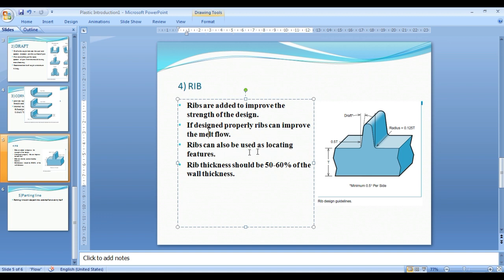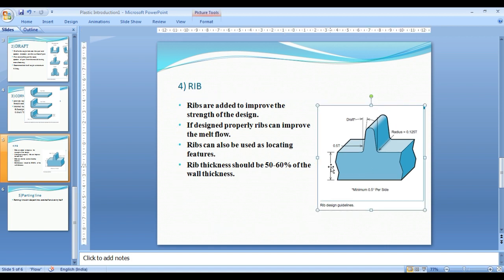Ribs can also be used for locating features. Rib thickness should be 50 to 60% of the part thickness or wall thickness, depending on the material properties.